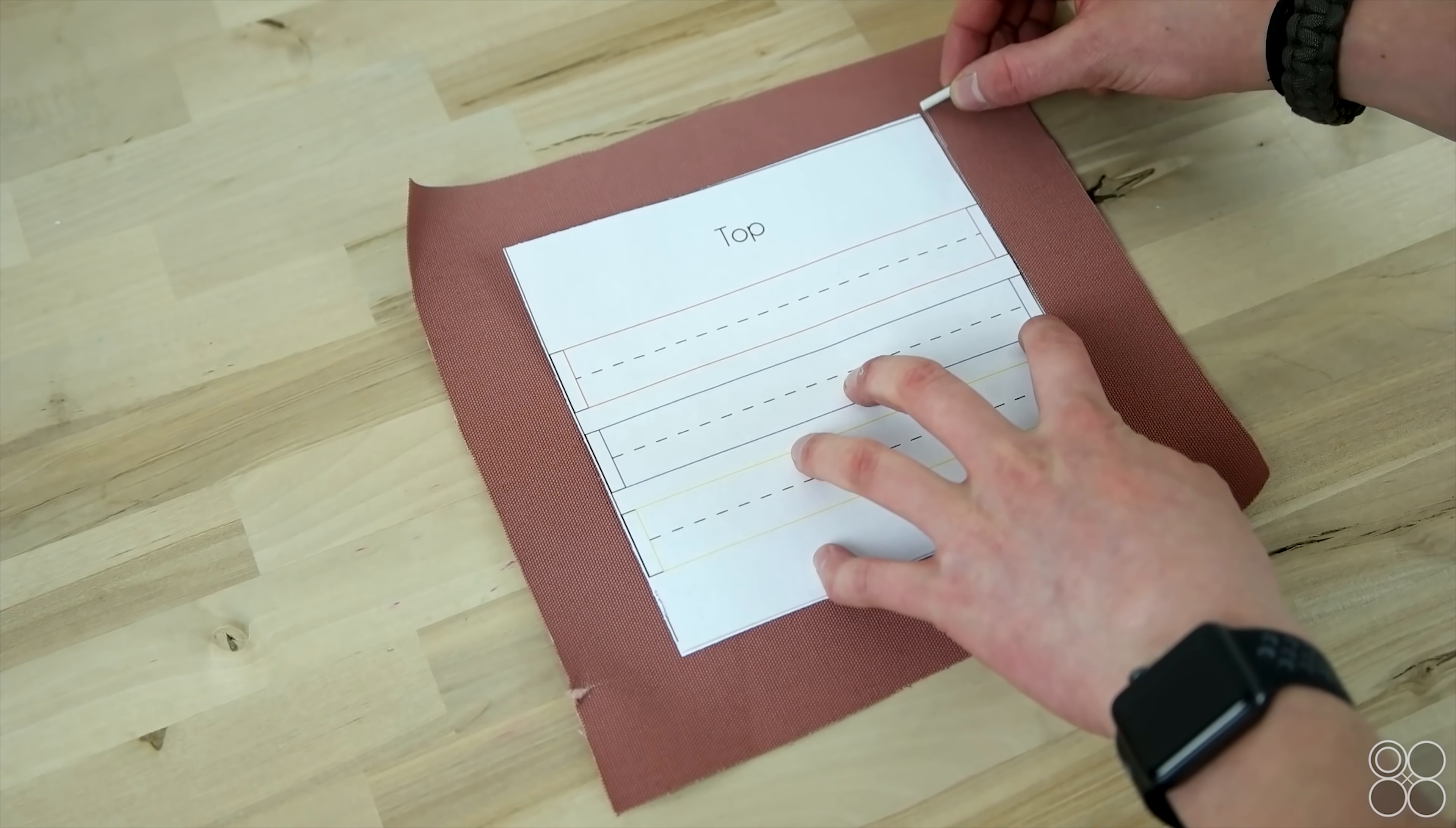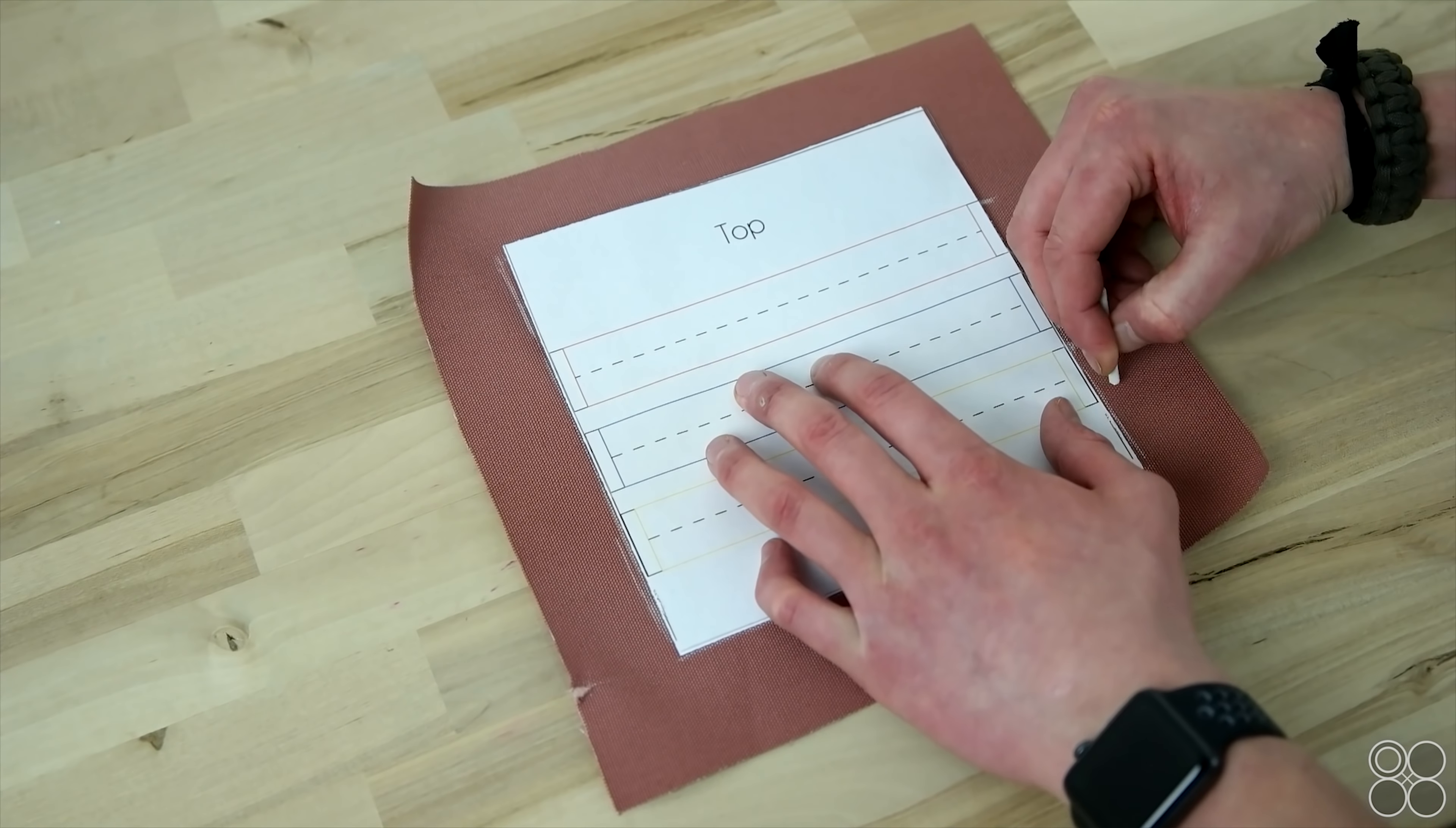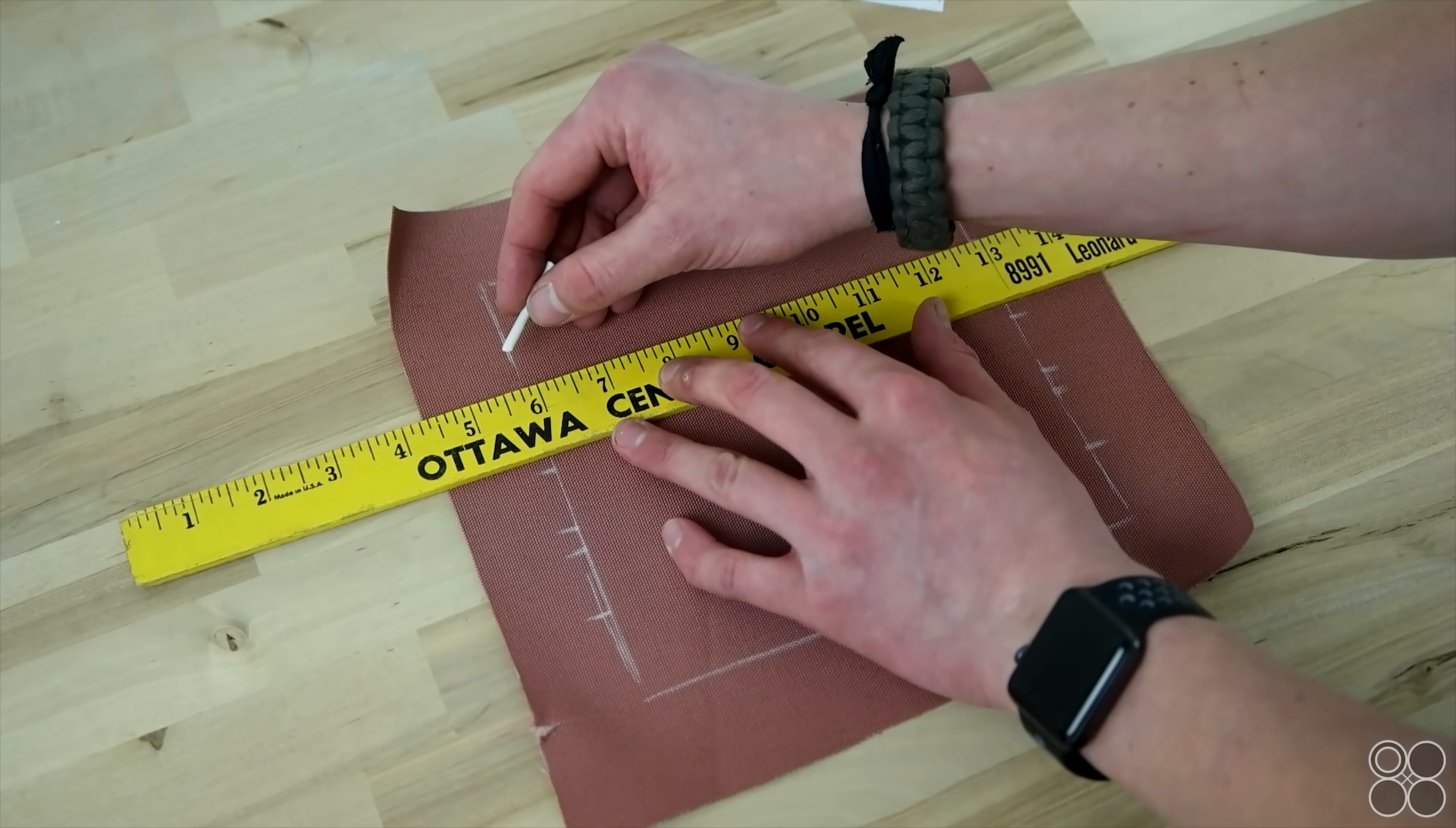So again, we went ahead and cut on the solid line because we are using the double fold bias tape, but if you're going to just fold and hem in the sides, you're going to want to cut on the dotted line. Go ahead and chalk around the outside of your pattern, and then you're going to want to mark each colored line, and there are six on each side, and then connect the lines going across. This will help create the folds for the front of your mask.